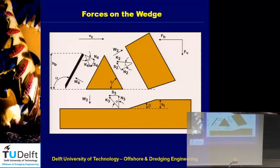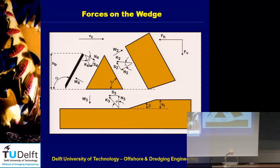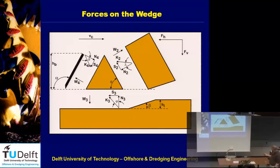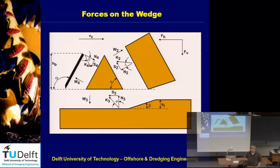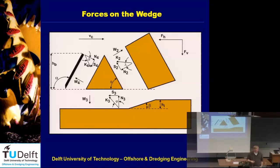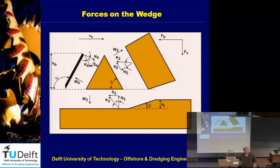Regarding forces on the wedge: very important is the delta — the angle of external friction. Why is it so important? Well, as long as the wedge is not moving, you do not know whether the external friction is upwards or downwards. It can be anywhere between a maximum and a minimum, and I will show you some graphs of what happens with that angle of external friction.